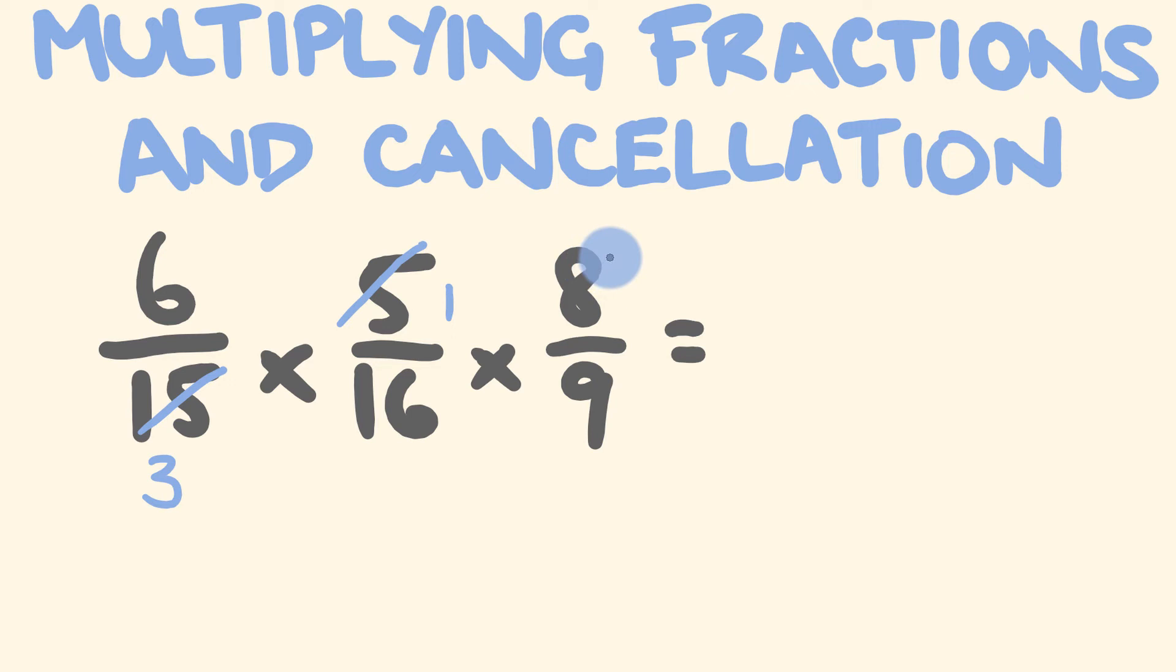5 and 15 well 5 goes into 5 once and 5 goes into 15 three times. 16 and 8. 8 goes into 8 once and 16 divided by 8 is 2. We also have 6 and 3 here. Okay 3 goes into both. 6 divided by 3 is equal to 2 and 3 divided by 3 is equal to 1. You can see here that we have a 2 and a 2.